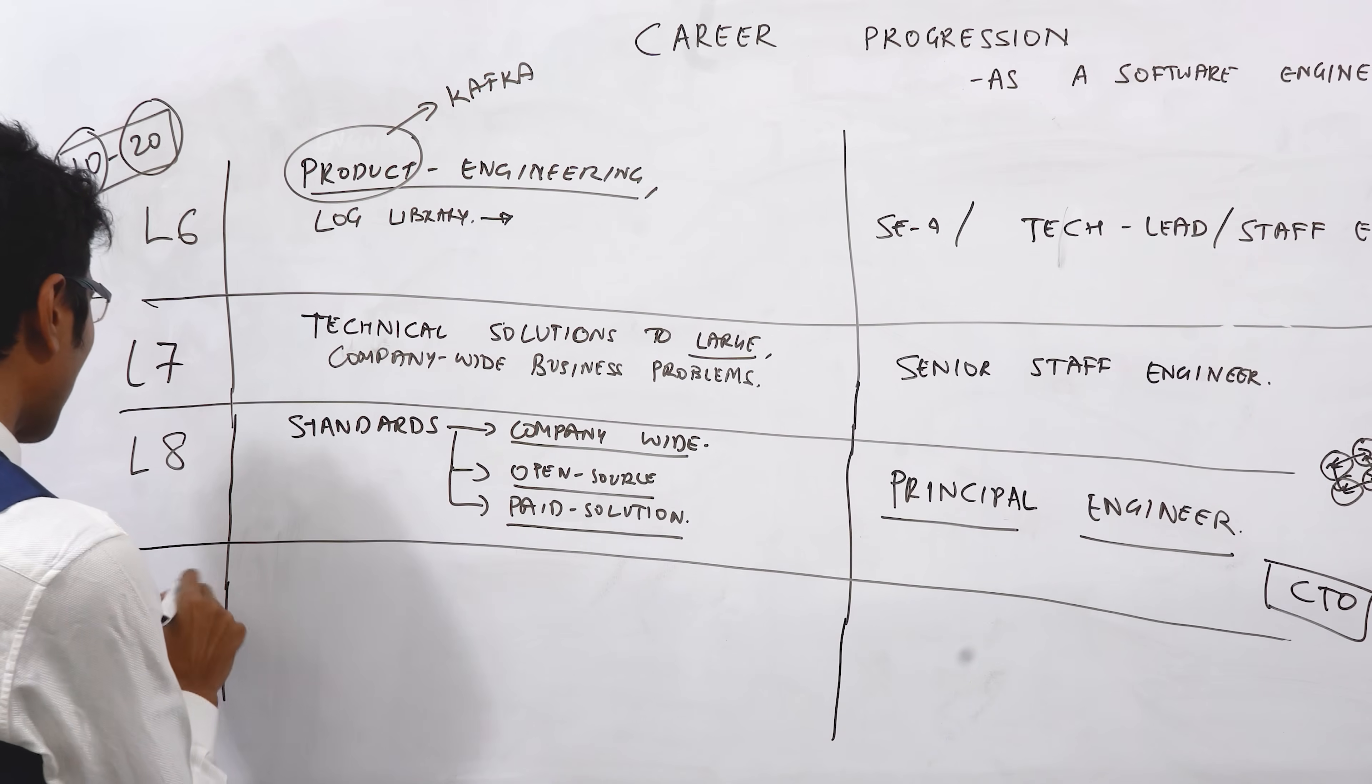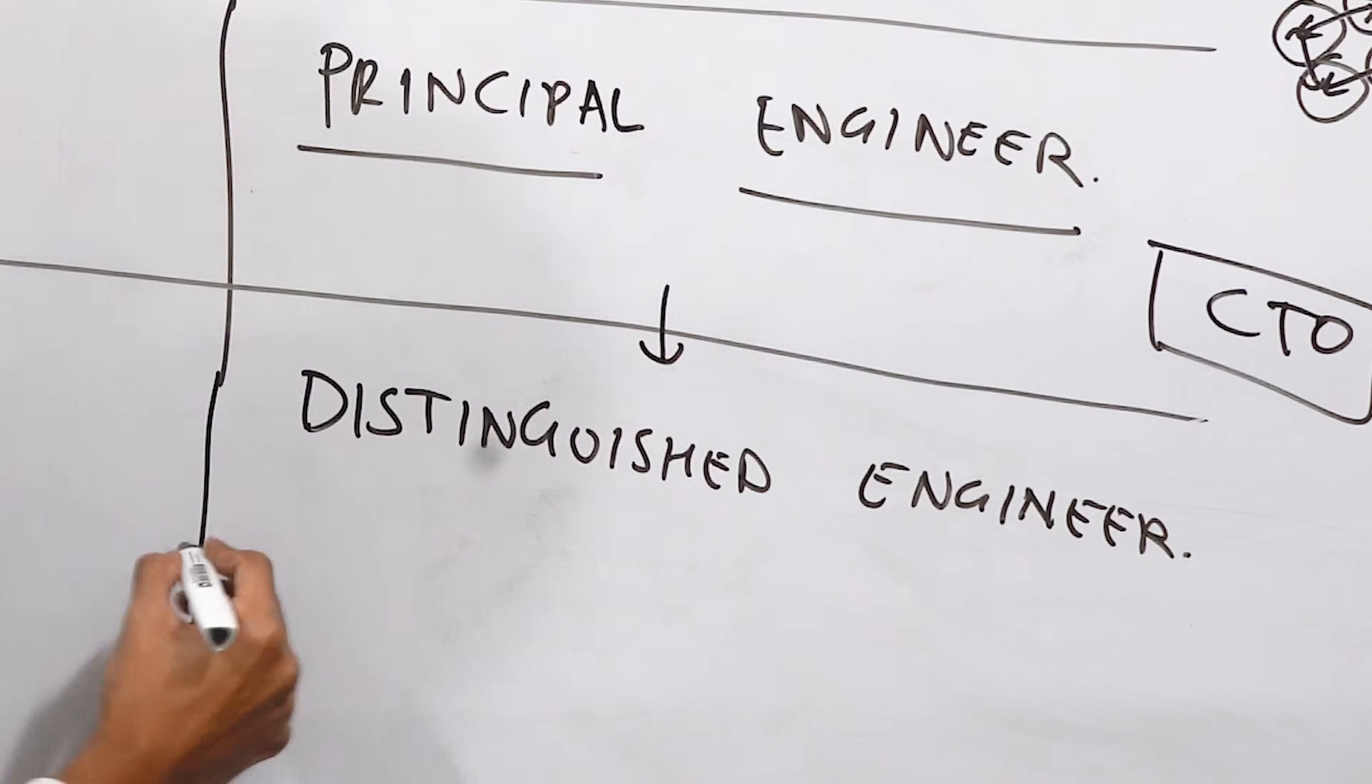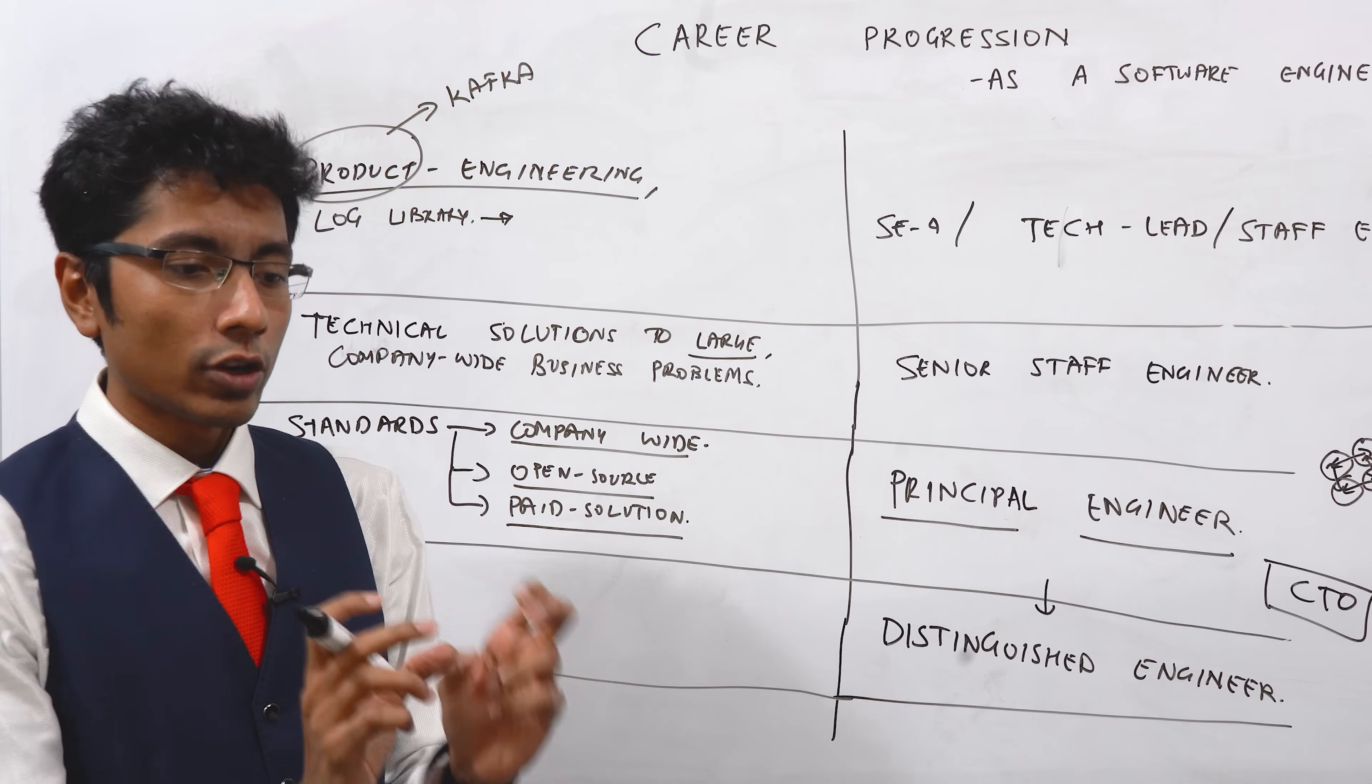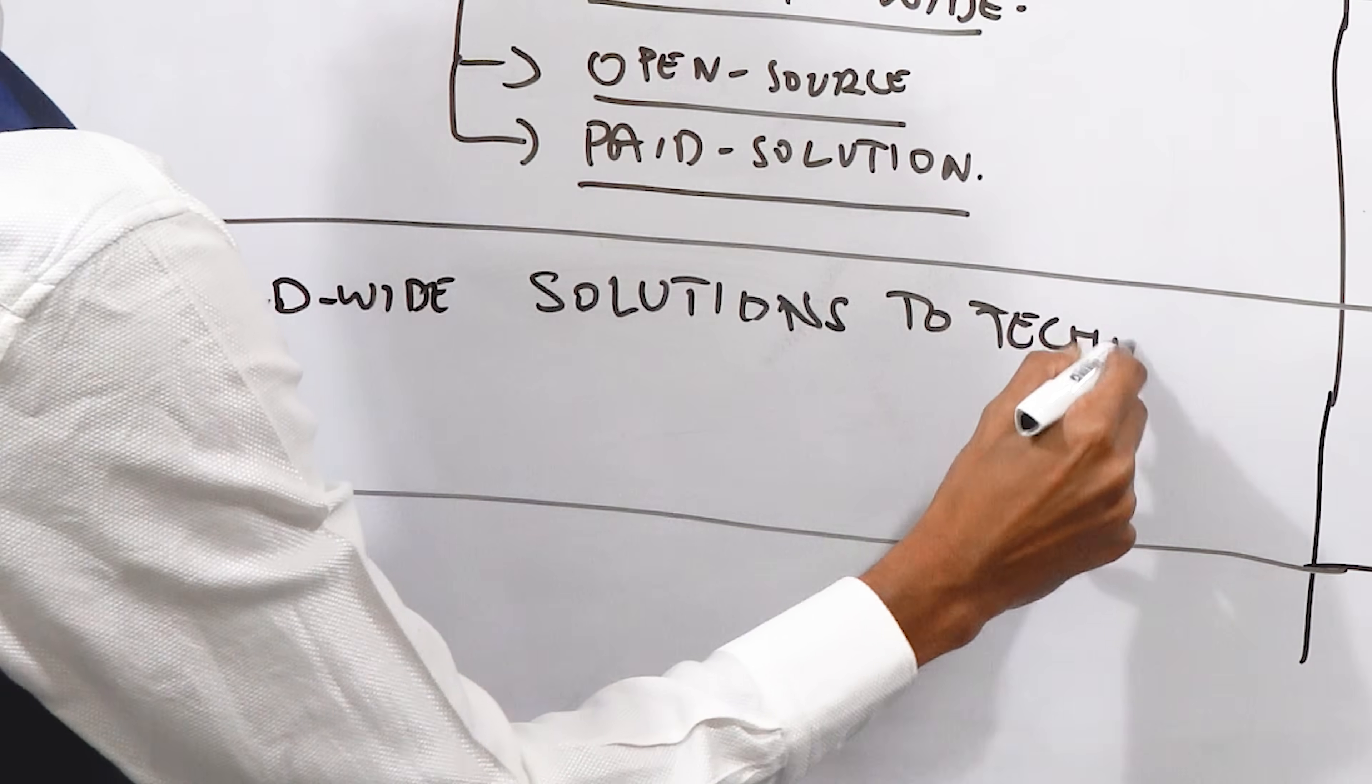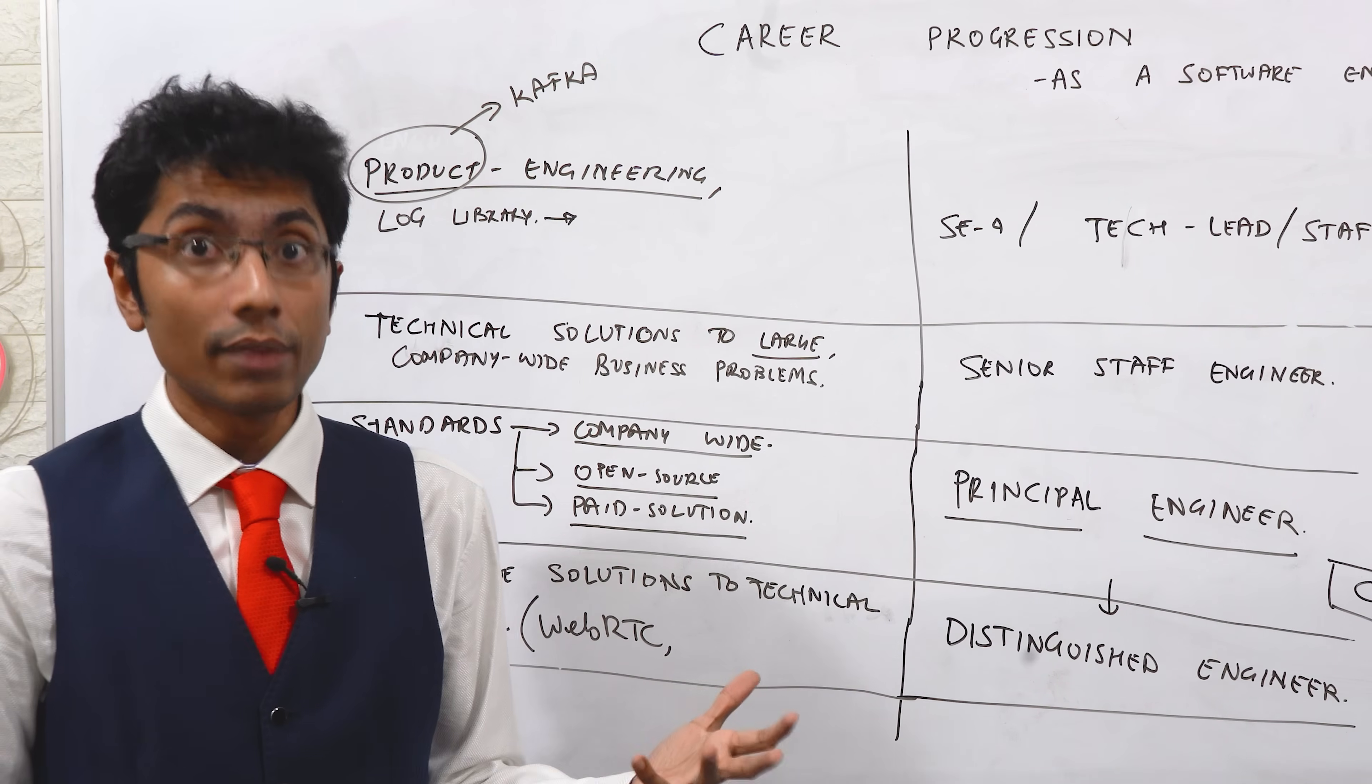But you also have one more position L9. There's really no word for this. But if you want one, I'll borrow one from Google: distinguished engineer. You are building technologies which help the world. They are not just technologies for your company. Of course, that is a part of it: worldwide solutions to technical problems. I'll take an example. WebRTC. WebRTC is something which we use when you're going on Google meet. That's a pretty amazing solution. Has helped us get through the COVID problem. We were able to video conference. That is the level of technology that we're talking about. It's not just company-wide.